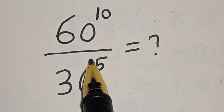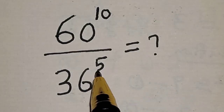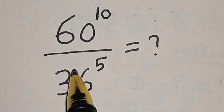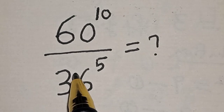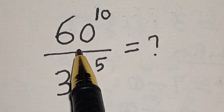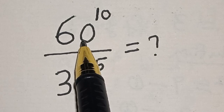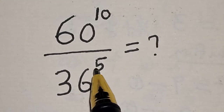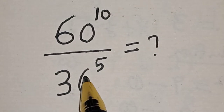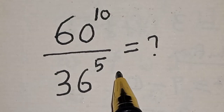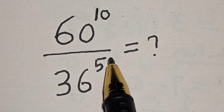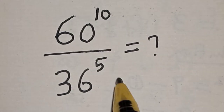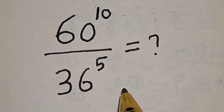60 raised to power 10 divided by 35 raised to power 5 is equal to what? Hi everyone, welcome to my class. In this class we want to evaluate this math problem: 60 raised to power 10 divided by 35 raised to power 5. But before we proceed, please don't forget to like, share, comment, and subscribe. Solution.